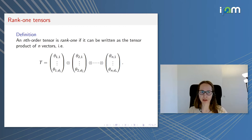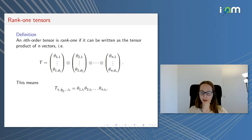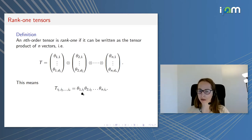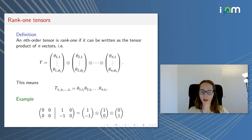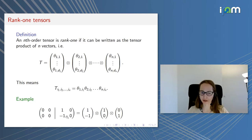Let's recall: an n-order tensor is rank one if it can be written as the tensor product of n vectors. In this notation, the (I1, I2, ..., IN) entry is the product of the corresponding parameters from the n vectors. Here you can see a rank-one example — it's a third-order, two-by-two-by-two tensor, with a front slice and a back slice, and it can be written as a tensor product of three vectors. So it's rank one.